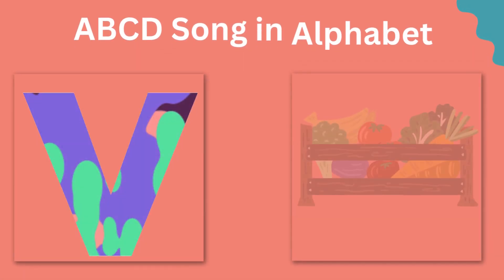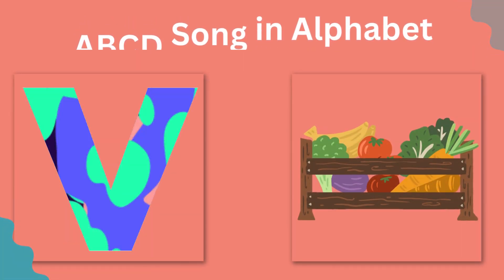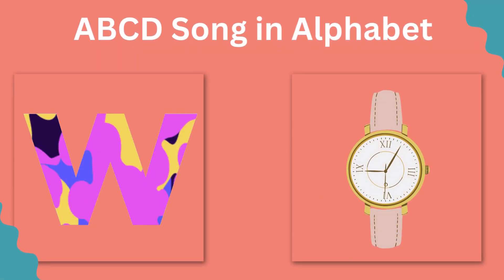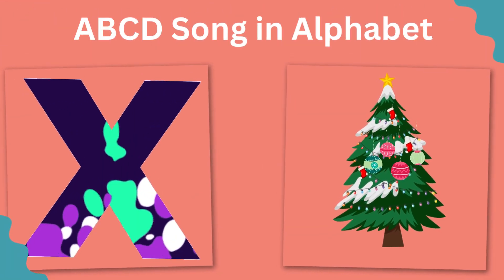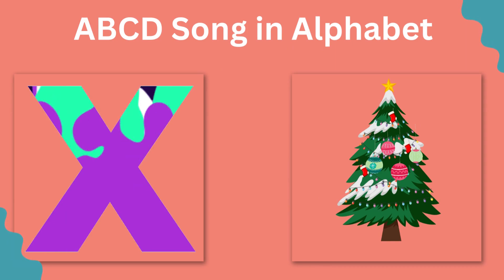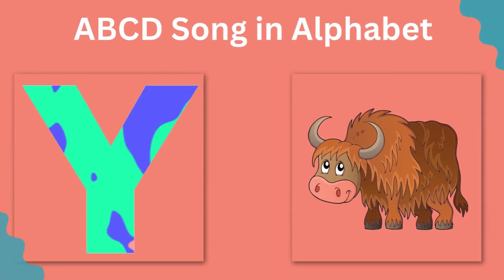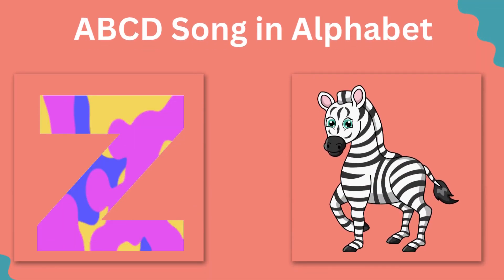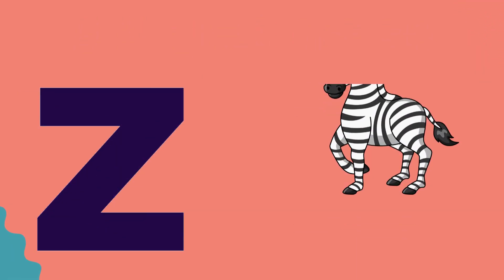V for Vegetables, W for Watch, X for Atmosphere, Y for Yak, Z for Zebra.